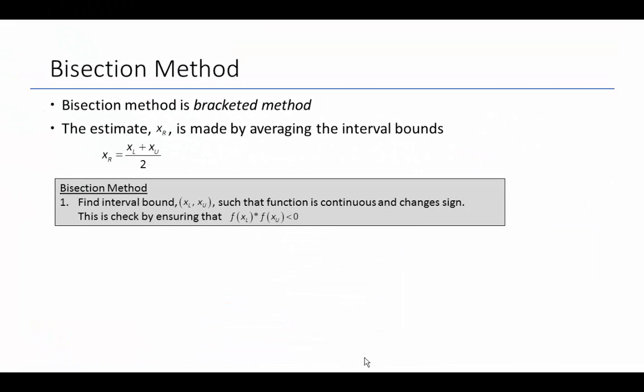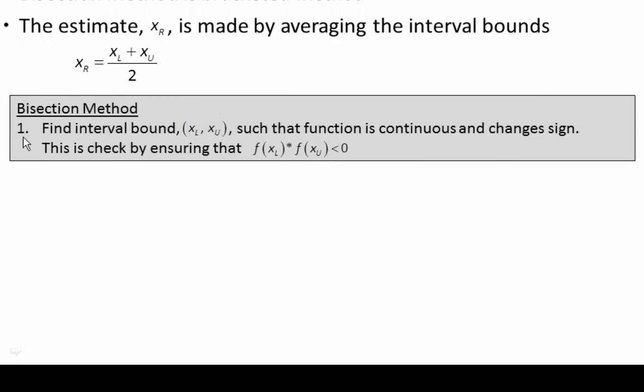A specific form of a bracketed method is the bisection method. Of all the bracketed methods, we just need some method of approximating the root, and the bisection method simply takes the average of your bounds. So we're cutting our interval in half every single time. The steps are: step one, find the interval bounds XL and XU such that it's continuous and changes signs. A quick mathematical check is if the function of XL times the function of XU is less than zero, then you have a change in sign.